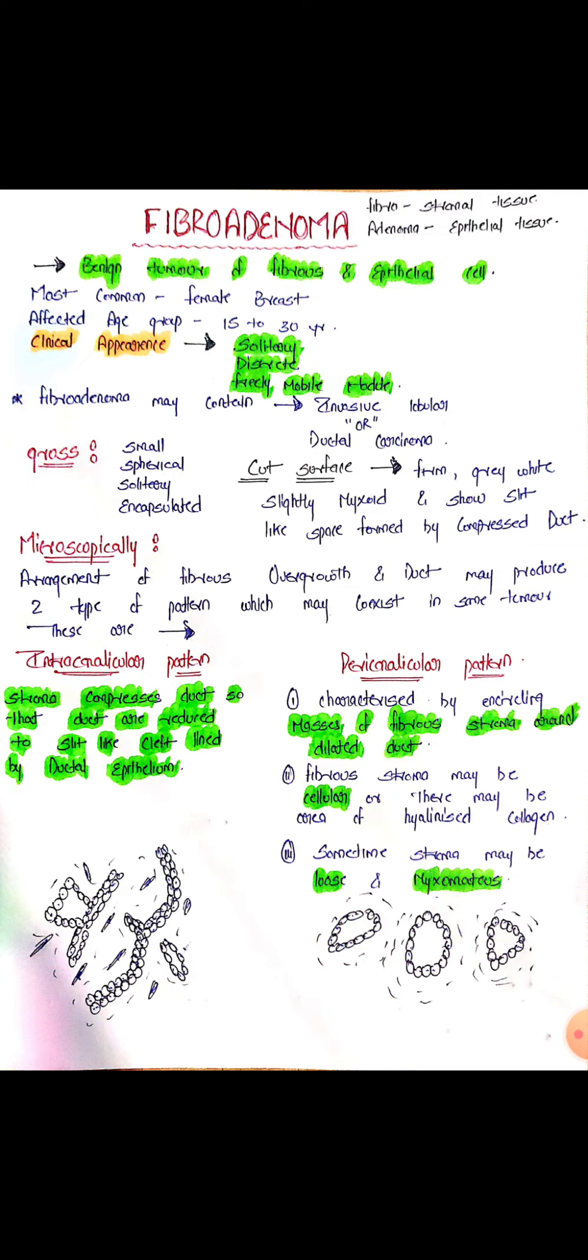Next we discuss microscopy. Arrangement of the fibrous overgrowth and ducts may produce two types of patterns which may coexist in the same tumor: intracanalicular and pericanalicular.